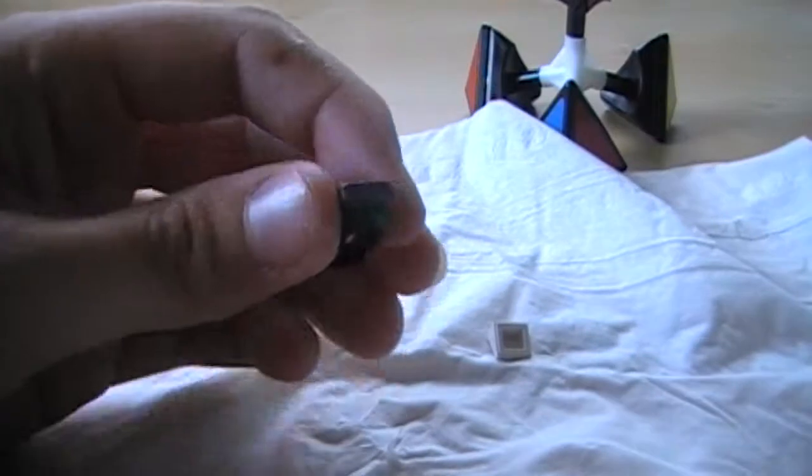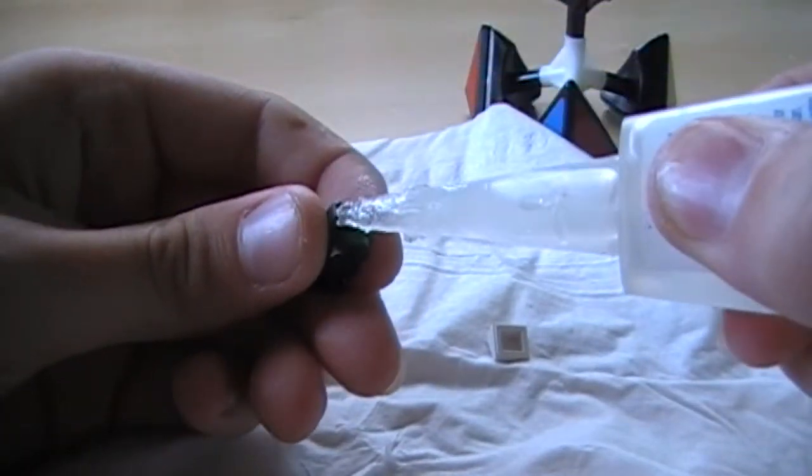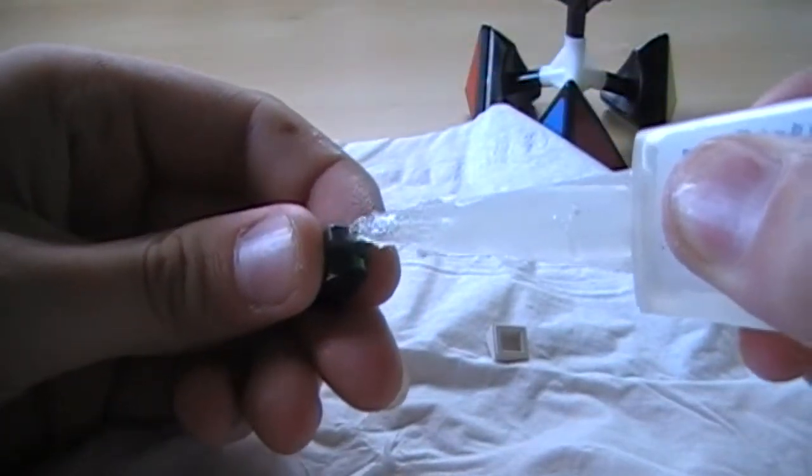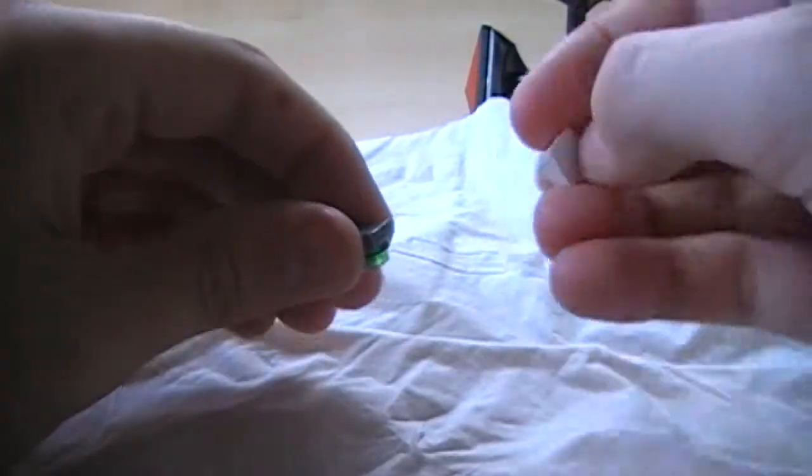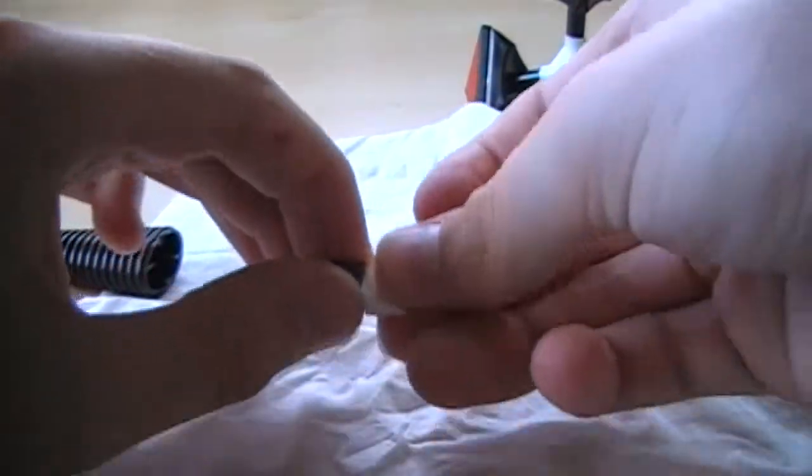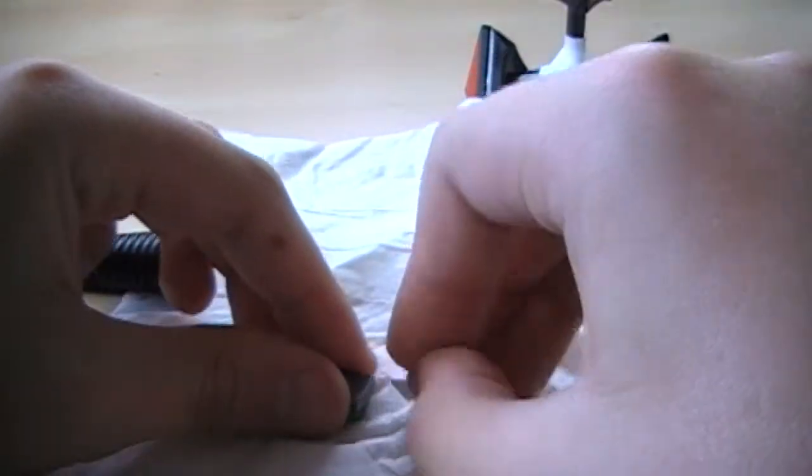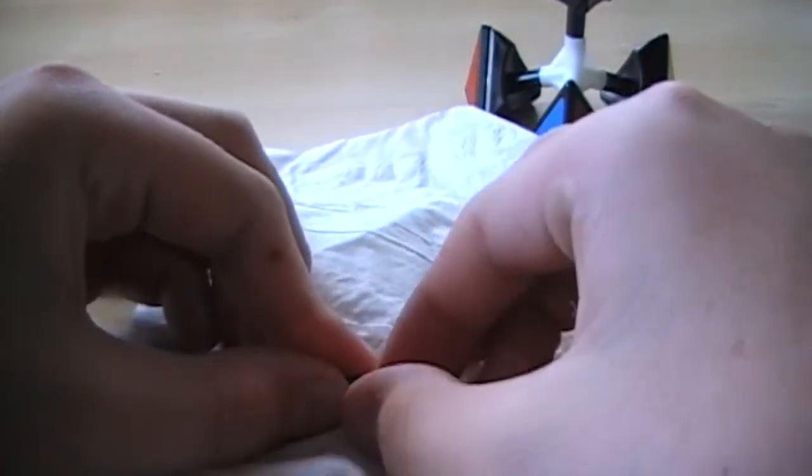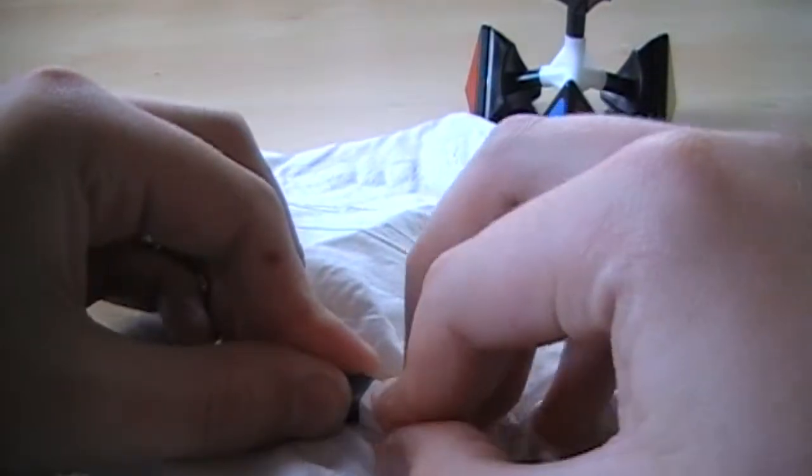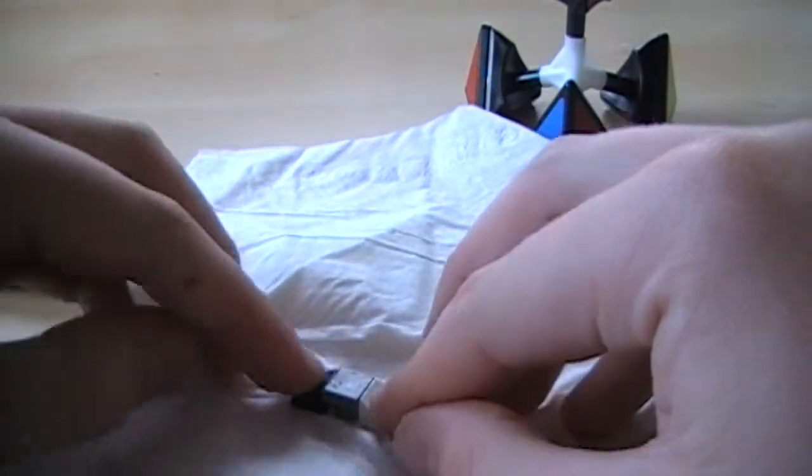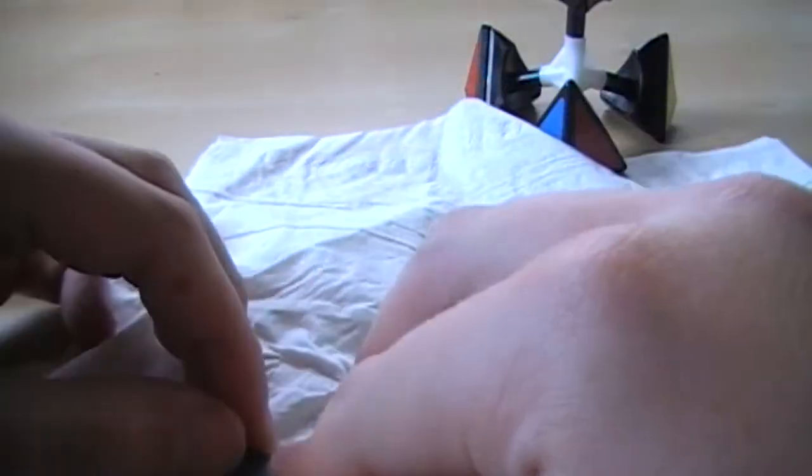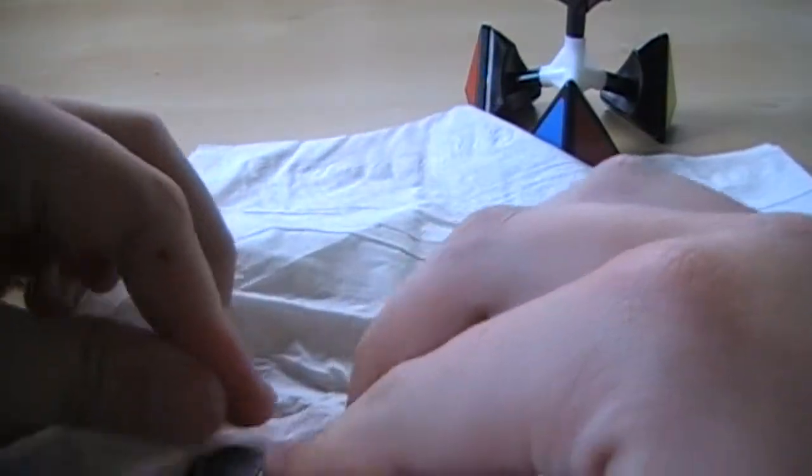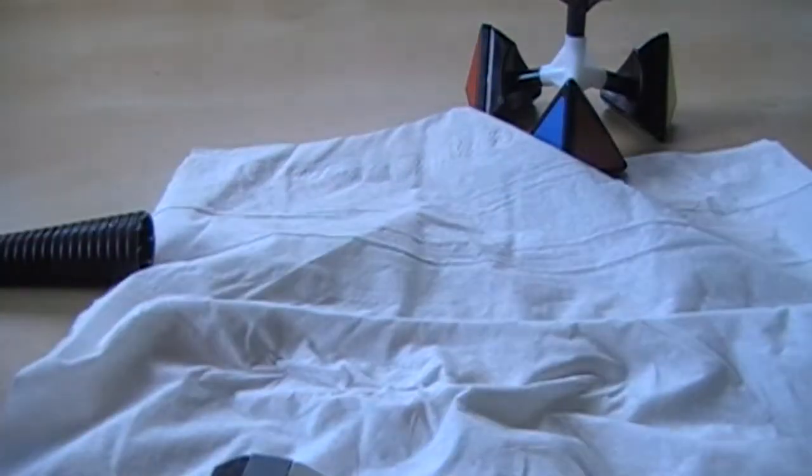And then we do the same thing on the other side. So just dab some super glue on here. Just like that. And then put the other piece up next to it. And just push. Make sure it's level and even and everything. Push them together. Make sure it's not being glued to the table. And there we go.